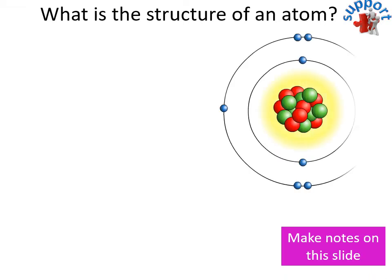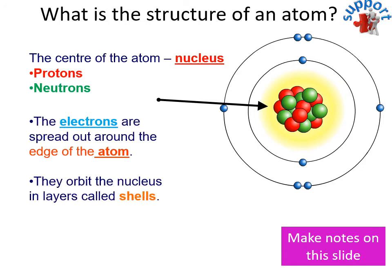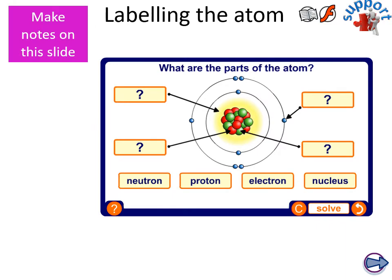The structure of an atom. You might be able to make notes straight away onto your assignment here, or you could do them on paper. Just to remind you that in the nucleus, we've got protons and neutrons, and the electrons are spread around the edge of the atom, and they're held in shells. There's another labeled diagram just to remind you of that. Make sure you can match them up. Make sure you know what we mean by the nucleus, the neutrons, protons, and electrons.